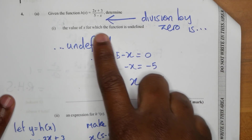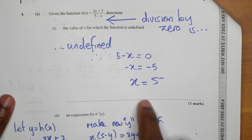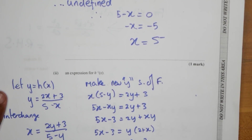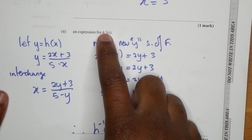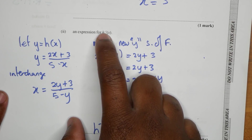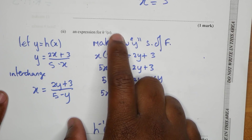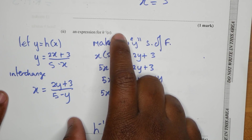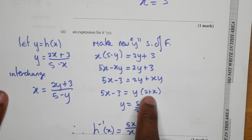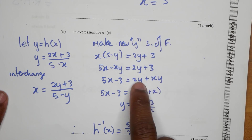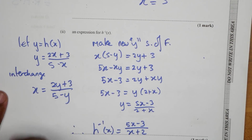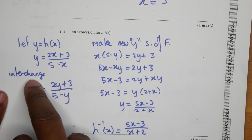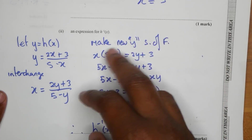Division by zero — undefined — so x is equal to five. This was one of the long questions. H-inverse — this is probably the hardest way they could bring inverse of a function. Finding the inverse when you have two things and you need to factorize all the y. Let y equal y, make y the subject, interchange — make y the subject of the formula — same thing.